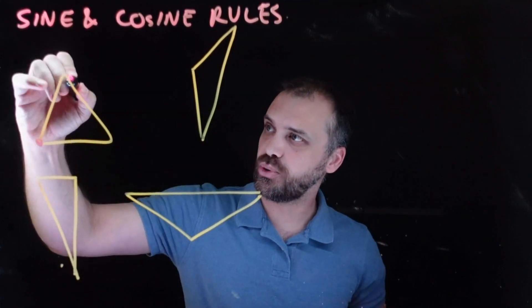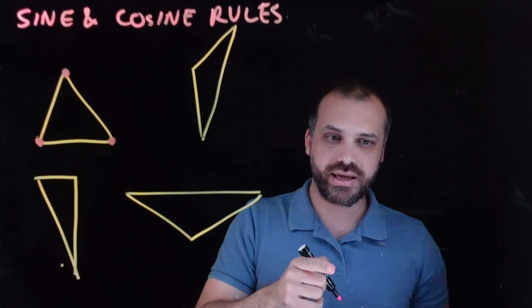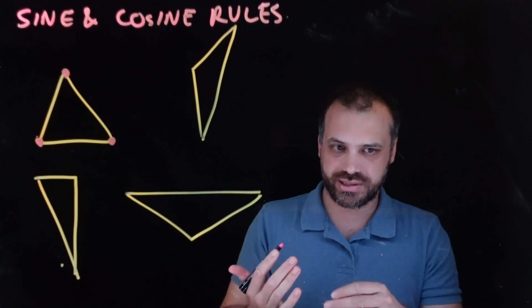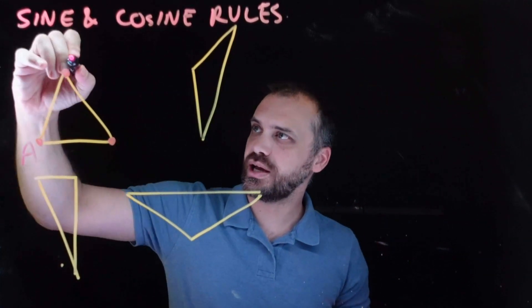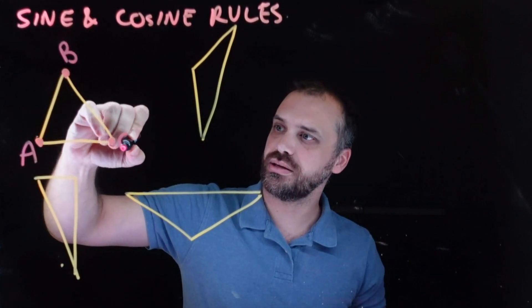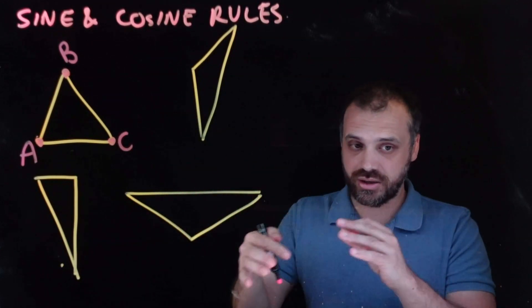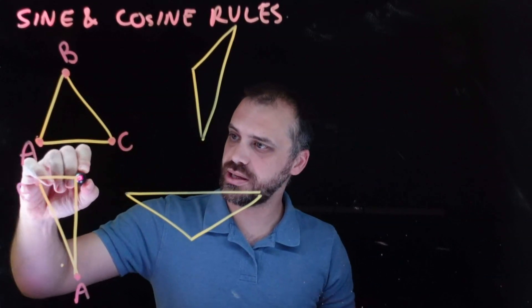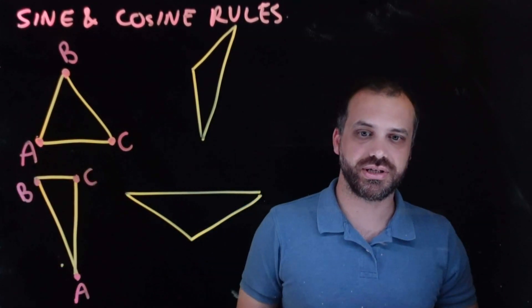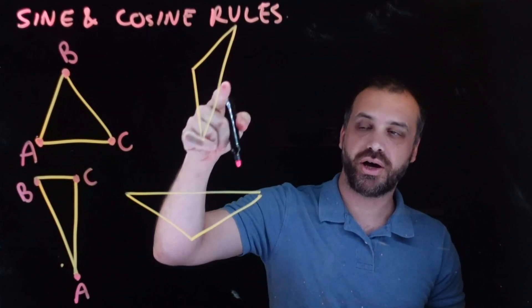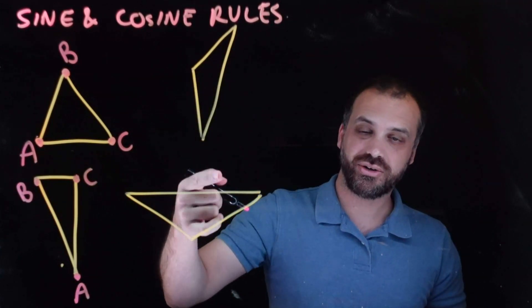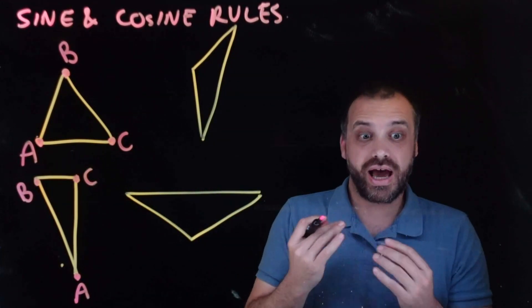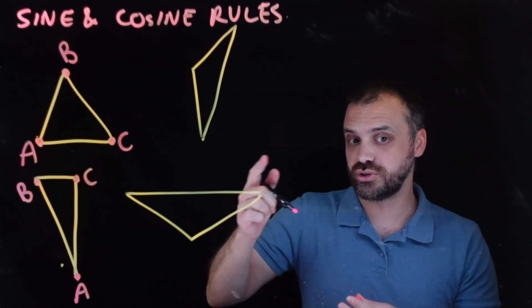We're going to call the points A, B, and C. Now, it doesn't matter which one's A, which one's B, which one's C. Capital letters. Capital A, capital B, capital C. It doesn't matter which one's which. I tend to work clockwise. That's just sort of a convention. You wouldn't have to, though. It's not important that you're working clockwise.